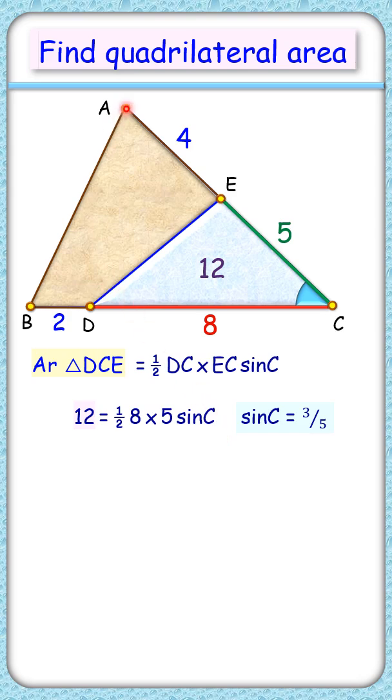Now let's put the same formula for triangle ABC, so area will be half of BC times AC times sin of C.